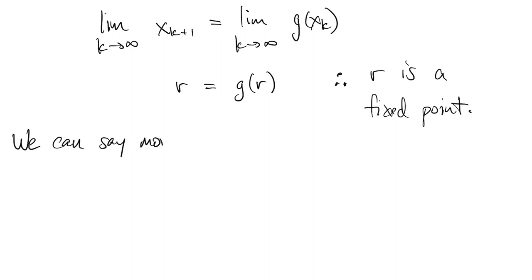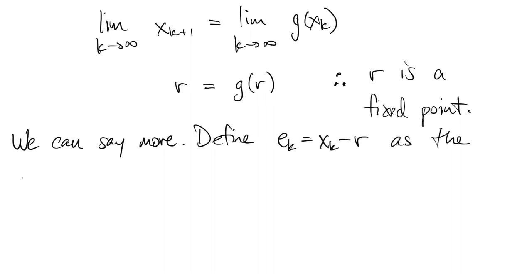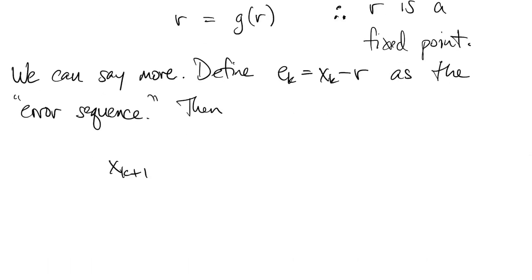But we can actually say more about how quickly we converge to that fixed point. We do that by defining a new sequence of errors. That's the difference between the xk and the final value r of the fixed point. So then we start with the fixed point iteration equation, subtract r from both sides, and then we get rid of the x's and write it in terms of the e's instead.